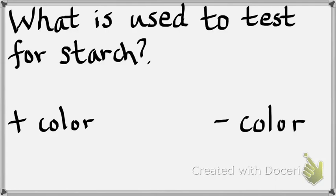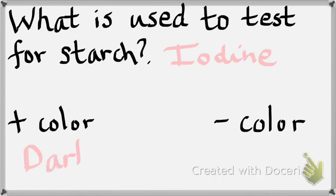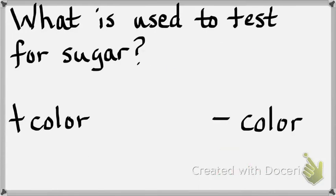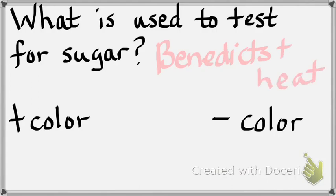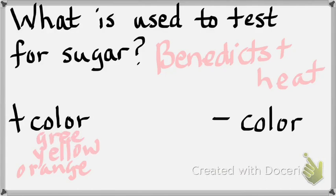What chemical do you use to test for starch? Iodine. The positive color is dark blue — it could be dark blue, black, purple, or chocolate brown; it has to be a dark color. The negative color is amber. What chemical do you use to test for sugar? Benedict's reagent, and you need heat. The positive colors are orange, yellow, or even green — green means a little sugar, yellow means moderate, orange means a lot. The negative color is blue.